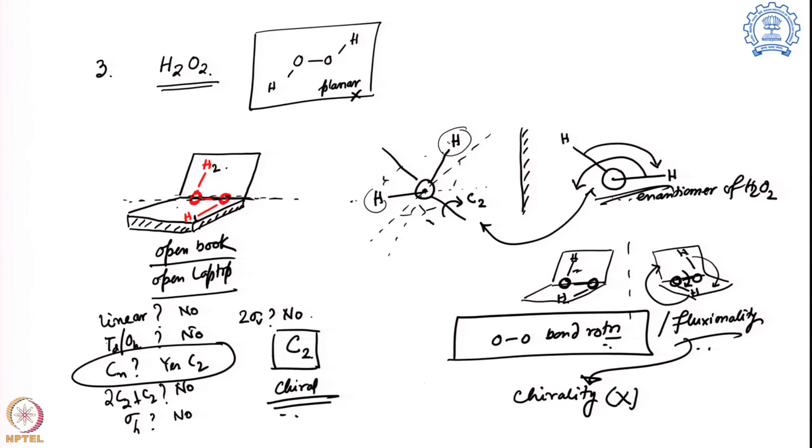To close, today we covered three examples: iron oxalate (D3 point group, chiral), iron glycinate (C3 point group, chiral), and both showing lambda and delta enantiomers. Then we examined hydrogen peroxide, which formally has C2 symmetry and should be chiral, but due to easy oxygen-oxygen bond rotation the molecule loses its chirality by rapidly interconverting between enantiomers. We will continue with other applications of CD spectroscopy and the molecular origin of circular dichroism in the next class. Thank you.